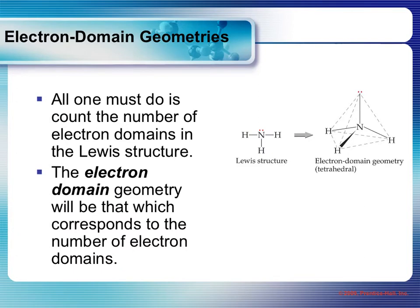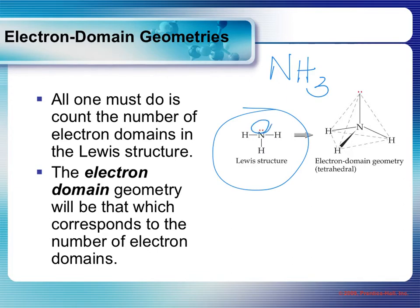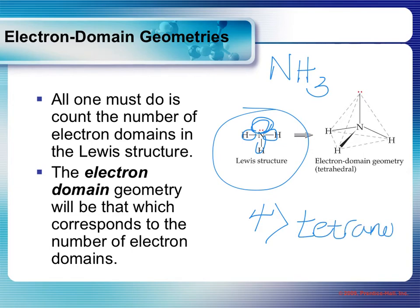Let's start with a simple one — ammonia, NH3. If you draw the Lewis structure correctly — and drawing the Lewis structure is the very first step of determining the molecular shape, and it has got to be correct, showing the lone pairs as well as all the bonds — if you count the areas of electron density around the nitrogen, which is the central atom, you have four areas. If you go back to the chart, if you have four areas of electron density, the shape they assume is called tetrahedral. Notice I say electron domain geometry.